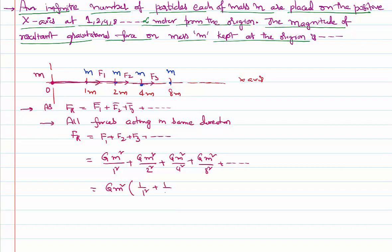...of 1 by 1 square, 1 by 2 square, 1 by 4 square, 1 by 8 square and so on up to infinity. This equals G m square of (1 plus 1/4 plus 1/16 plus 1/64 and so on). They are all in GP, geometric progression.